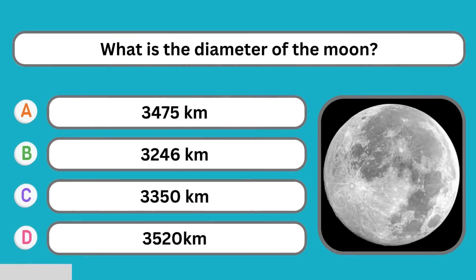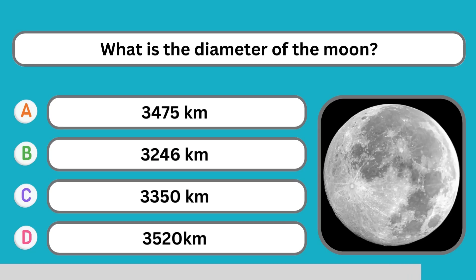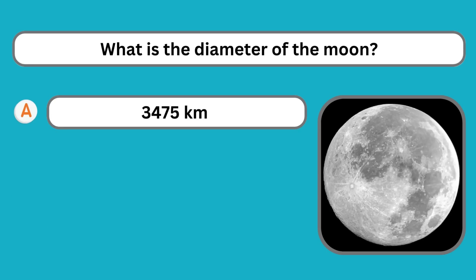What is the diameter of the moon? 3,475 km.